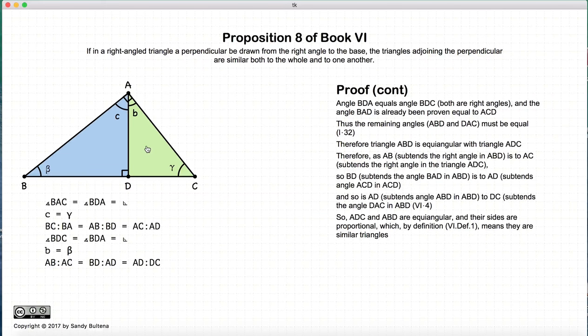Wrapping this all up, we have that ABC is similar to ABD which is similar to ADC. That is the proof.